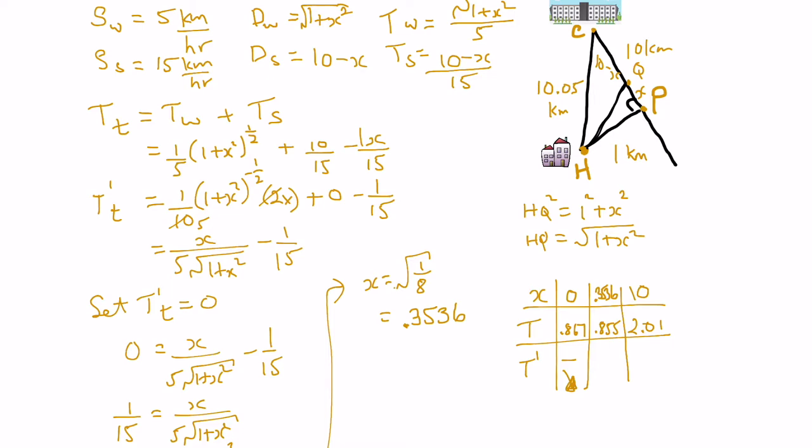Now, if we put in 10 into our first derivative, this will be 10 over 5 times the square root of 1 plus 10 squared, and this minus 1/15 is actually a positive throughout. So, we can put that in as positive so that the graph is increasing there.